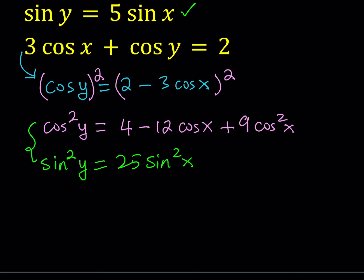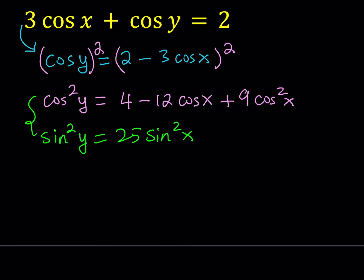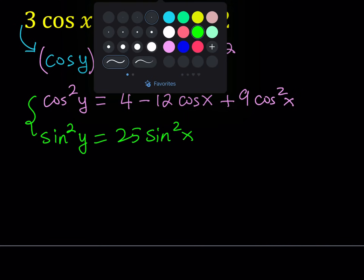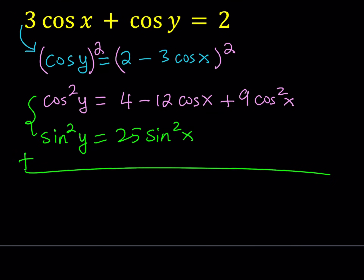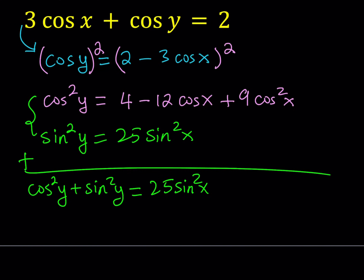Now we're going to look at these two equations. We have cosine squared y in one and sine squared y in the other — both on the left-hand side in different equations. What we can do is add these two equations side by side. On the left-hand side I get cosine squared y plus sine squared y. On the right-hand side I have 25 sine squared x plus 9 cosine squared x minus 12 cosine x plus 4.